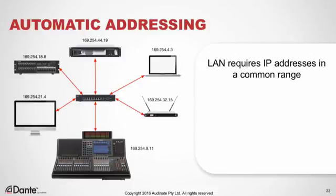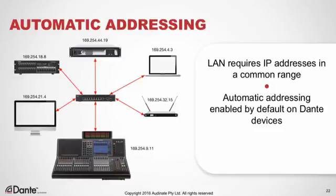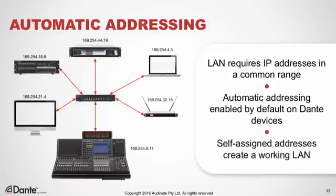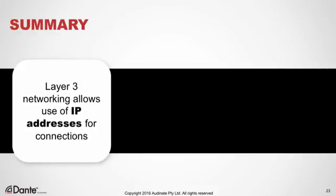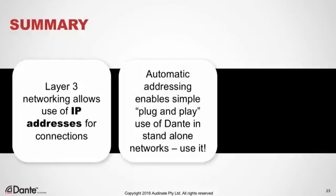When we talk about LANs and the need for a common address range, let's talk about how this gets done in real life. Because IP addresses are really important to a working network, Dante supports automatic addressing. When devices are connected together, Dante devices will self-assign addresses that create a working LAN with no conflicts — no other components or configuration are necessary. Note that Dante fully supports all common means of managing IP addresses: they can be configured manually, or you can use a DHCP server if you have one. But most Dante systems are standalone networks using self-assigned addresses. Layer 3 is what enables the use of IP addresses in networking, and automatic addressing ensures true plug-and-play use of Dante in standalone networks.